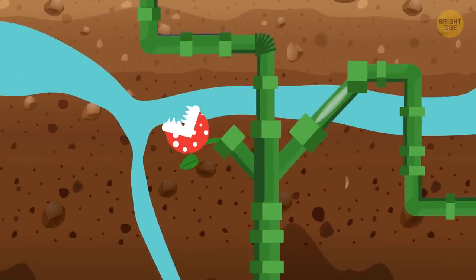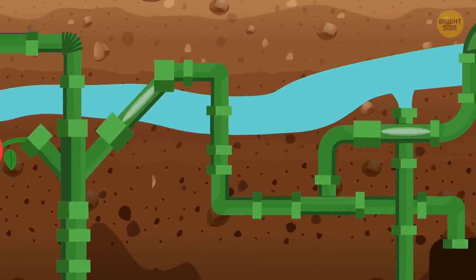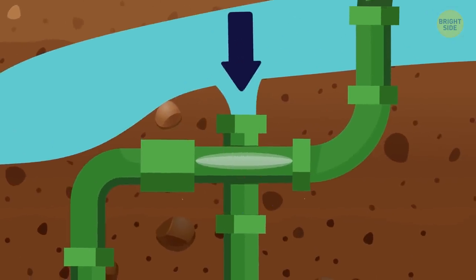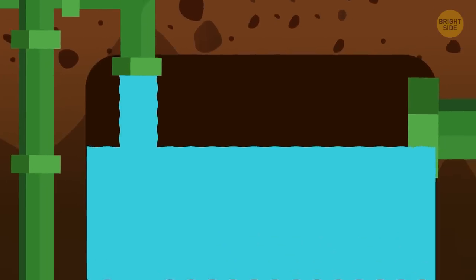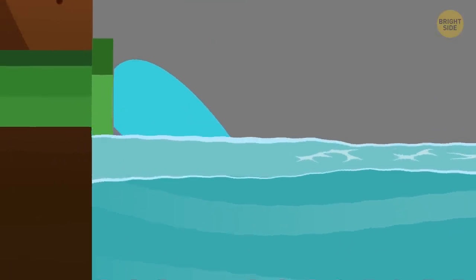That's why complicated drainage systems are installed in the subway. These systems divert water from the soil, pass it through strong pipes, and it accumulates in special wells. Then the water spills into the city's sewage system.